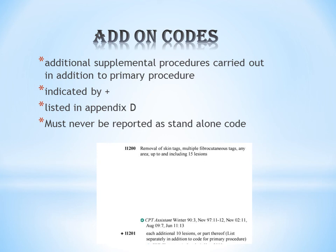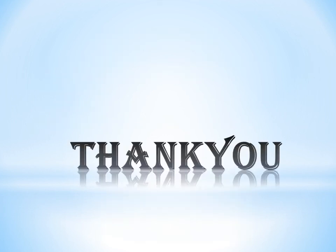Code 11200 means removal of skin tags — multiple fibrocutaneous tags, any area, up to and including 15 lesions. If the number of lesions is 25, you report both 11200 and the add-on code +11201 for the additional lesions. These add-on codes are identified by the plus sign and should never be given as the first code.